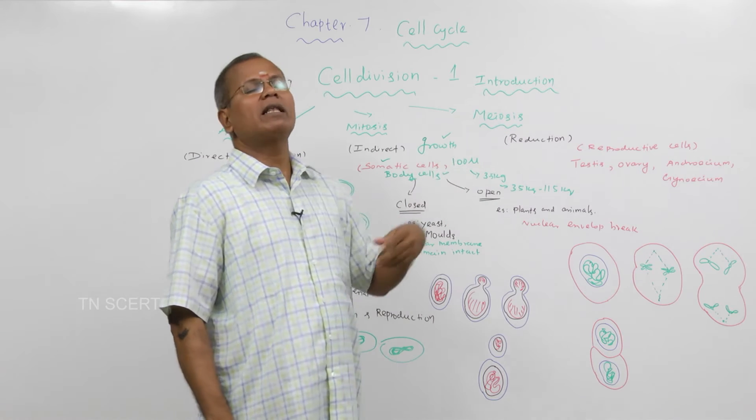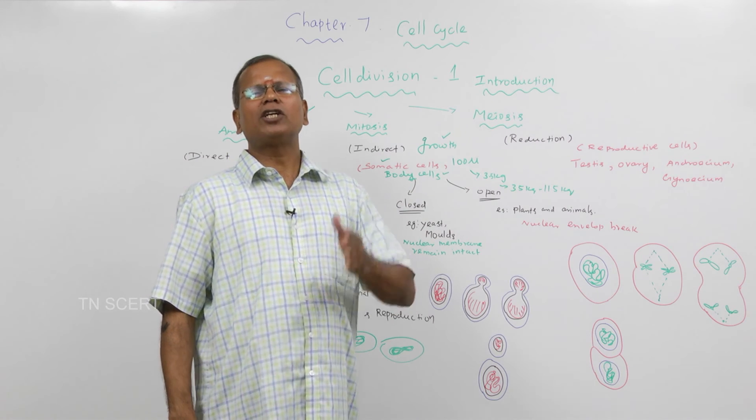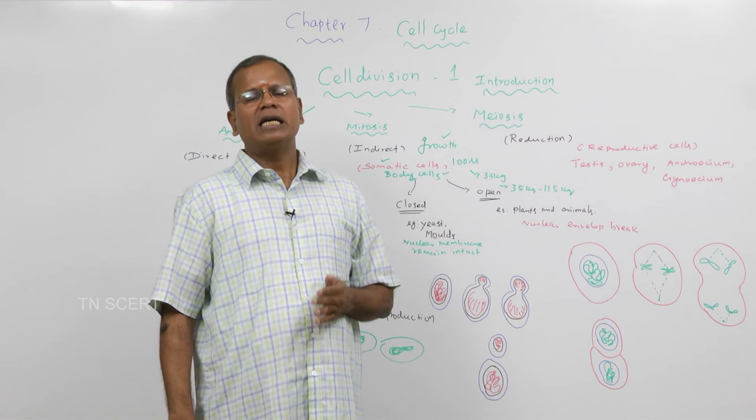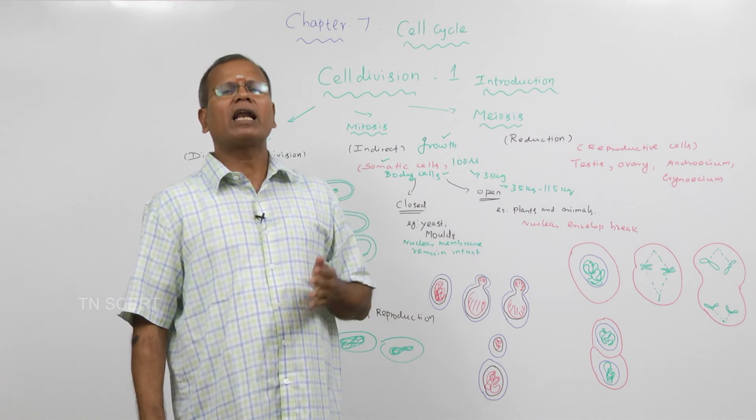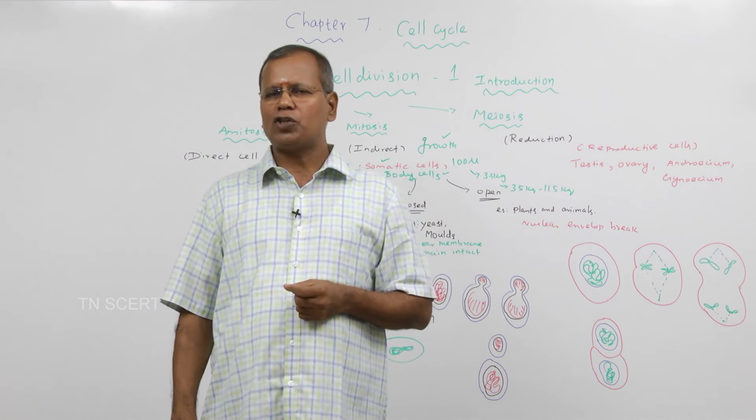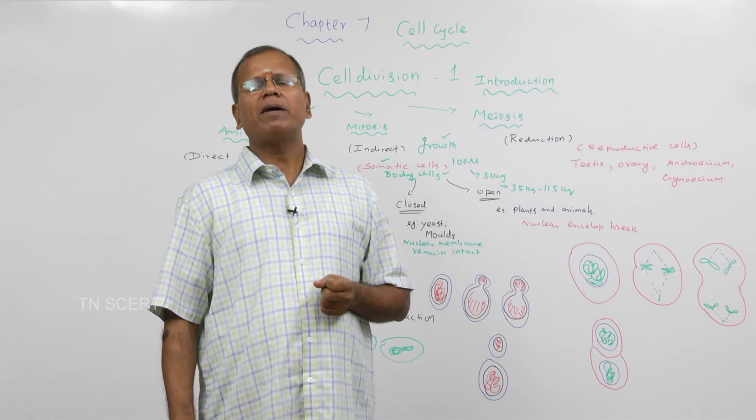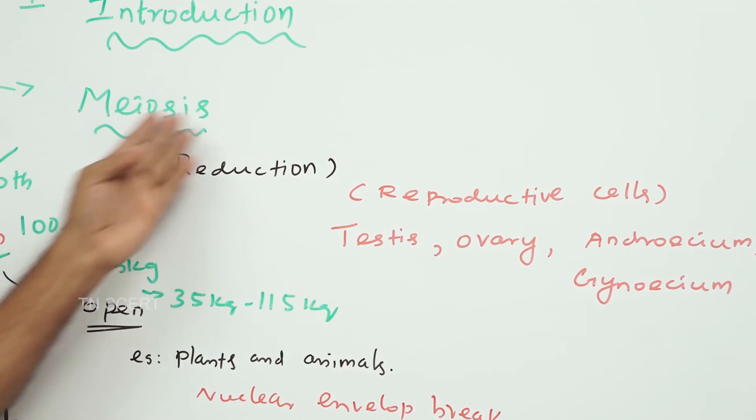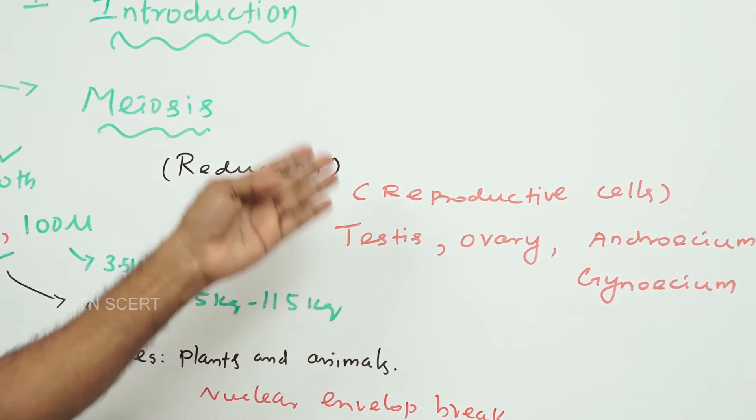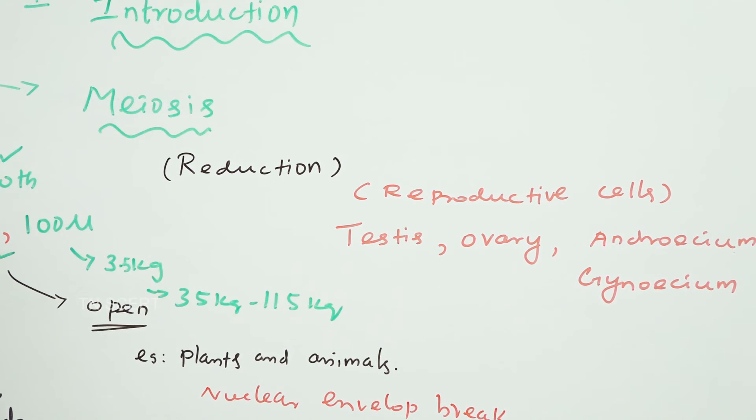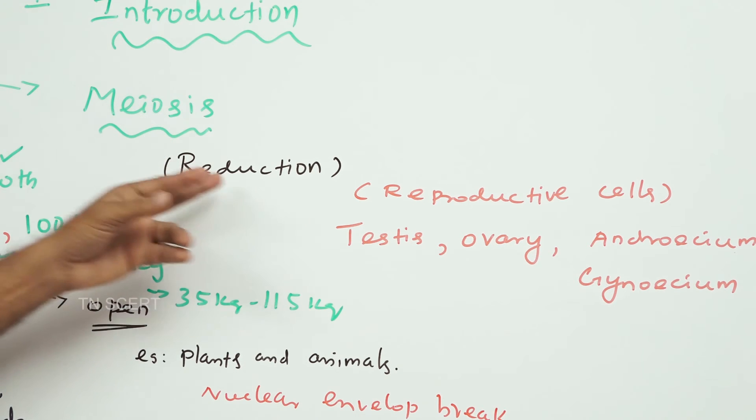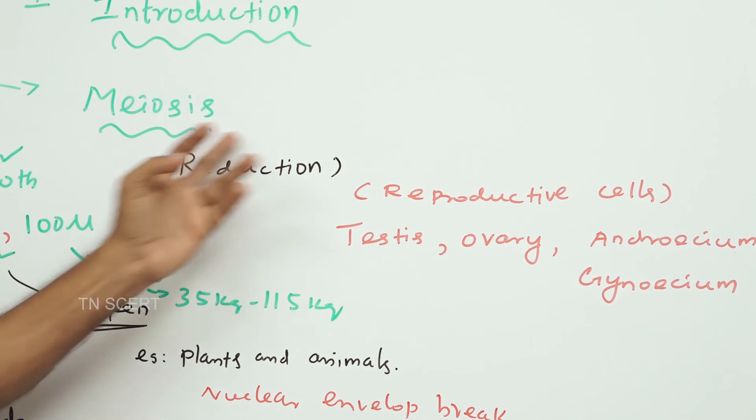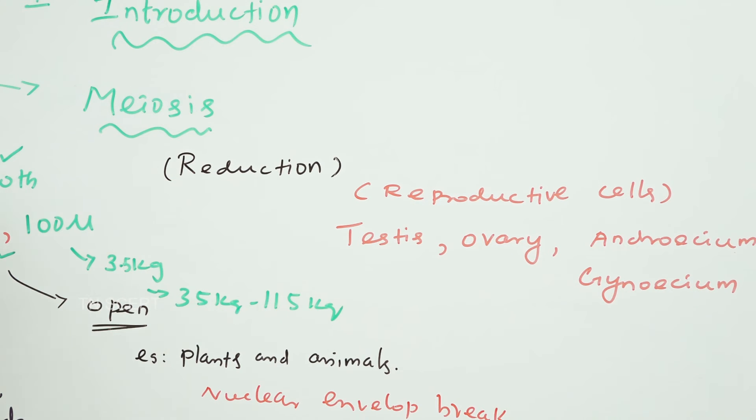The second very important one, the meiosis. Meiosis is said to be the reduction cell division takes place in the reproductive organ like testes, ovary, androsium and gynosium. In the end of meiosis, the chromosome number is reduced to half. So it is said to be reduction cell division.